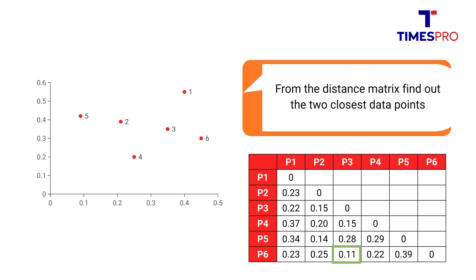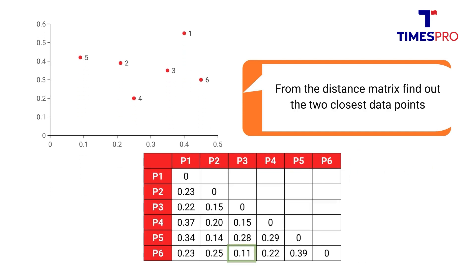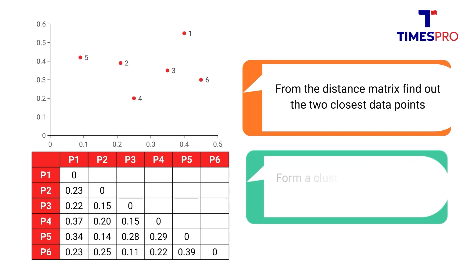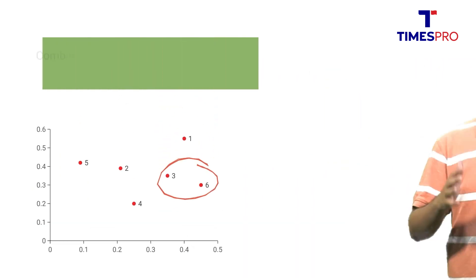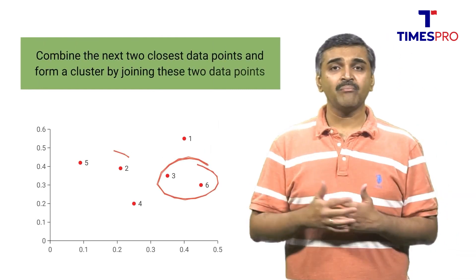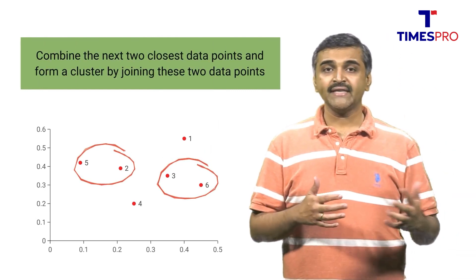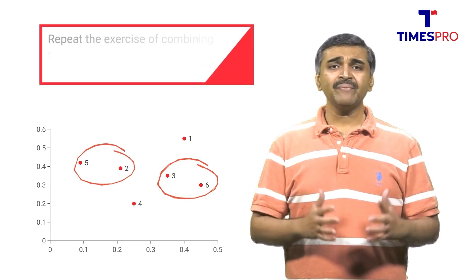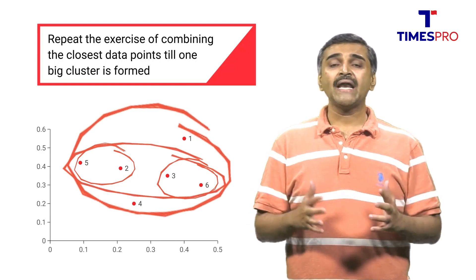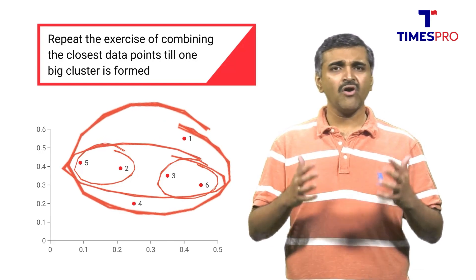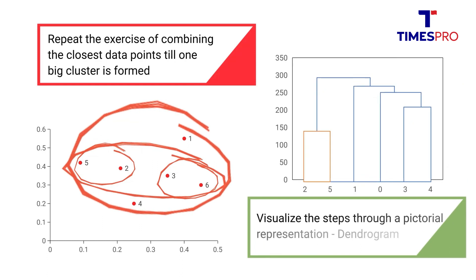We look at the distance matrix and figure out which are the two closest data points, then form a cluster by joining them. We then combine the next two closest data points and form a cluster by joining them. We repeat this exercise of combining the closest data points until one big cluster is formed, and visualize these steps through a pictorial representation called the dendrogram.